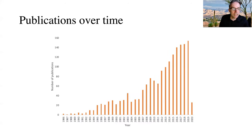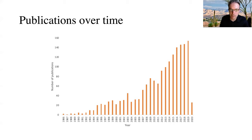We see that the number of publications per year is steadily increasing to about 150 articles a year. The information for 2020 is incomplete, which explains the smaller number for 2020.